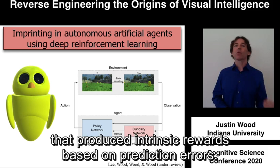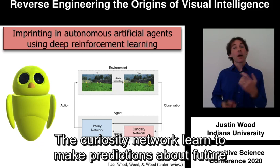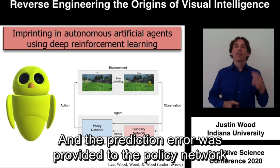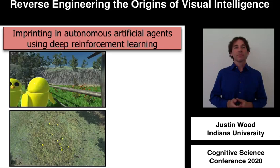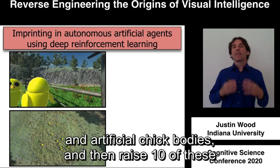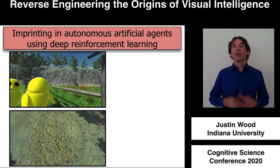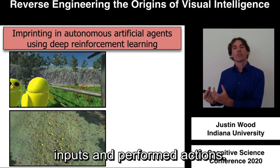The curiosity network learned to make predictions about future observations based on the current observation and action, and the prediction error was provided to the policy network as an intrinsic reward. We then embedded this artificial brain in artificial chick bodies and raised 10 of these agents together in a realistic virtual reality world. Like real chicks, our artificial agents received raw visual inputs and performed actions — so these are pixels-to-actions agents.